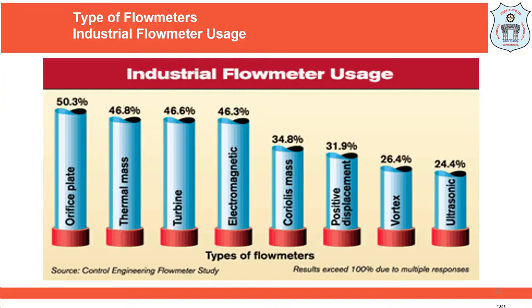Looking at usage of different flow meters: orifice meters are used by almost 50% of industries, thermal mass meters by 46%, turbines by 46.6%, electromagnetic measurements by 46%, Coriolis mass meters by 34%, and positive displacement methods by 30%. These percentages exceed 100% because individual industries use multiple types simultaneously. For all these flow measuring devices, a change in pressure needs to be measured, making pressure measuring devices an integral part.